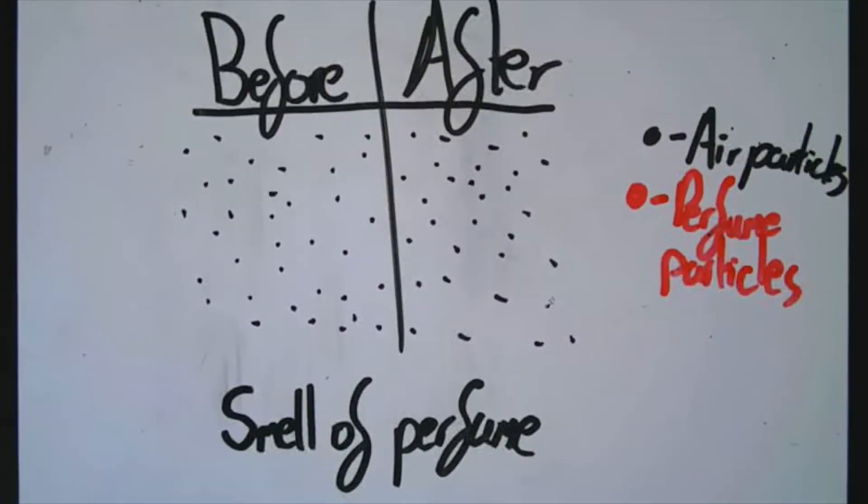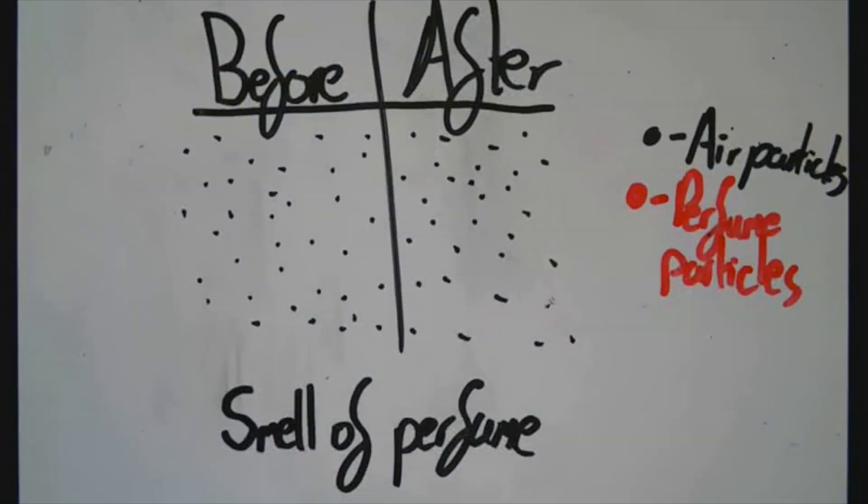Diffusion is the movement of particles from a region of higher concentration to a region of lower concentration. I'm going to demonstrate this now. Substances move into and out of cells by the process of diffusion.